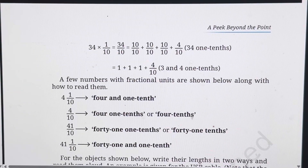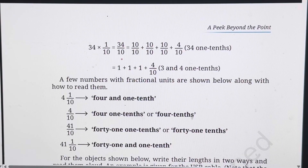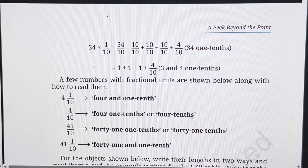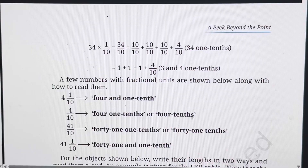So 34 into 1 upon 10, because there are 34 tenth parts — 34 upon 10. Or you can say 10 upon 10 plus 10 upon 10 plus 10 upon 10, each equal to 1: so 1 plus 1 plus 1 is 3, and 4 upon 10. So it becomes 34 times 1 tenth, or 3 and 4 tenths. These are different ways of reading the same number.